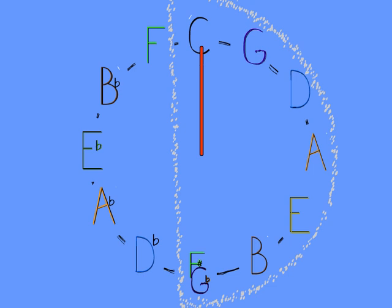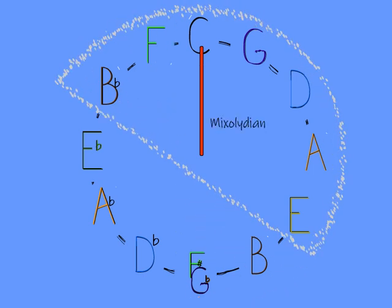If we want C to be in Mixolydian mode, we shift the grouping the other way. Now C is in Mixolydian, and we are in the key of F, now in Ionian mode.